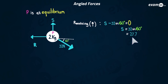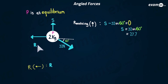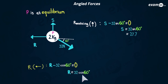To find R, we resolve horizontally with left as positive. R acts to the left, and the 32 Newton force has a horizontal component — this time to move it horizontal we crush the angle, so it's 32 cos 60, which is negative as it acts to the right. Setting equal to zero and rearranging gives R equals 16 Newtons.